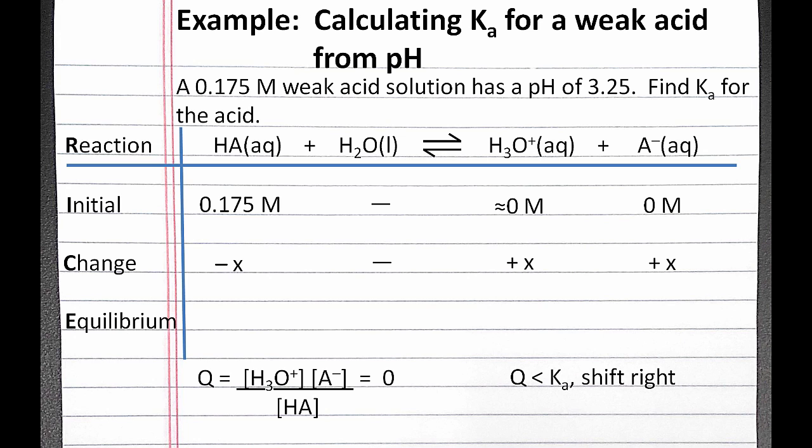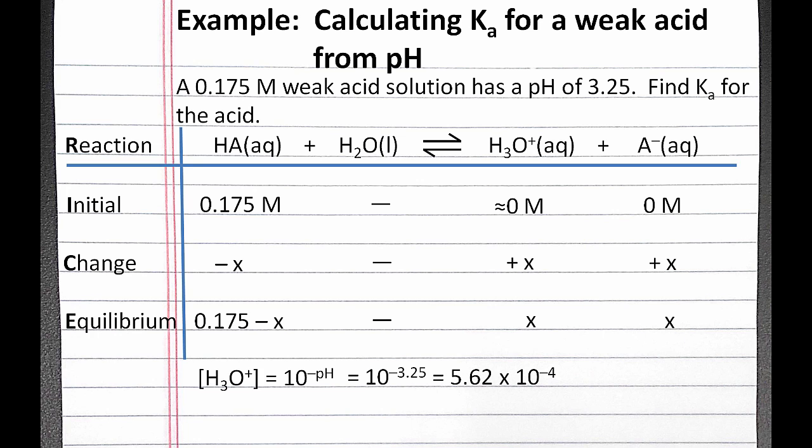To calculate our equilibrium concentrations, we'll add our initial concentration and our change in concentration. Since we're given the pH, we can calculate the hydronium ion concentration at equilibrium. It will equal 10 to the negative pH. So that's 10 to the negative 3.25, which if we put it in our calculators is 5.62 times 10 to the negative 4th. And this is equal to x at equilibrium.